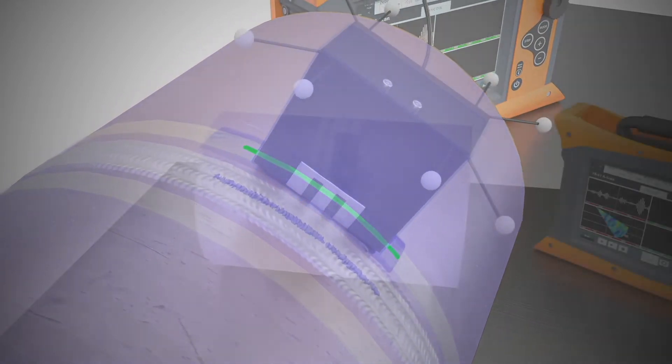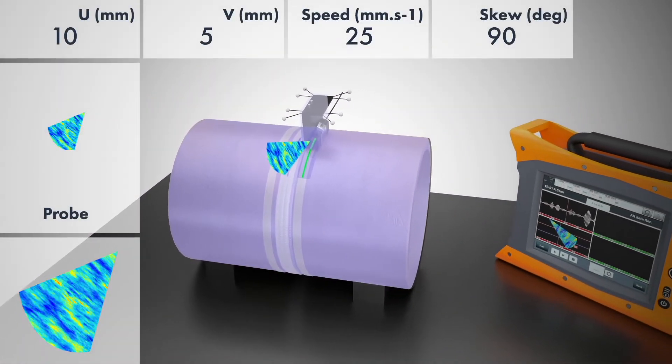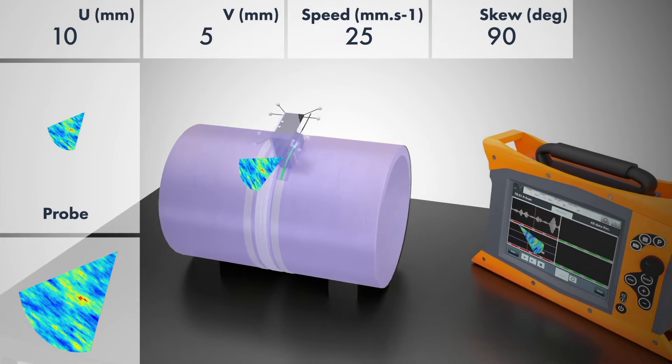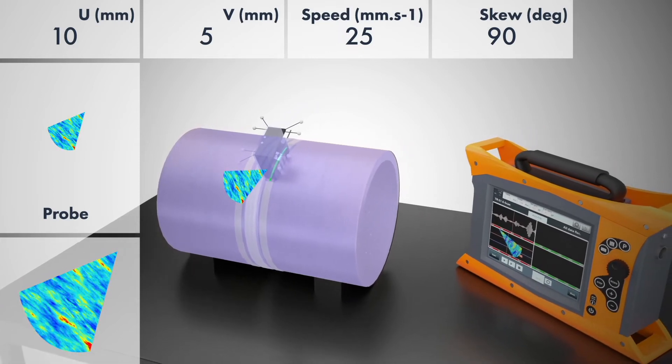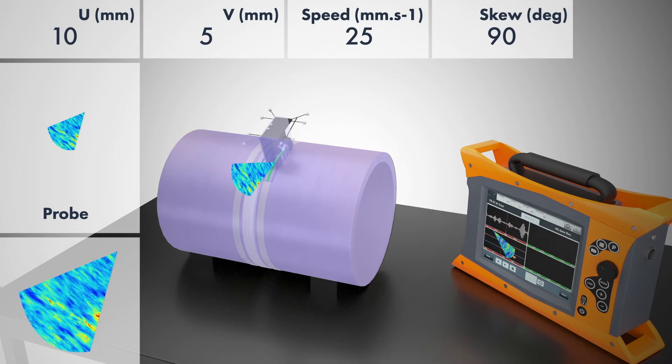With all the data now in the field of view in real-time, this AR system no longer requires the examiner to interpret the spatial location of the data from a two-dimensional screen, because it is now displayed in 3D at its actual location on the component through the use of a head-mounted display.